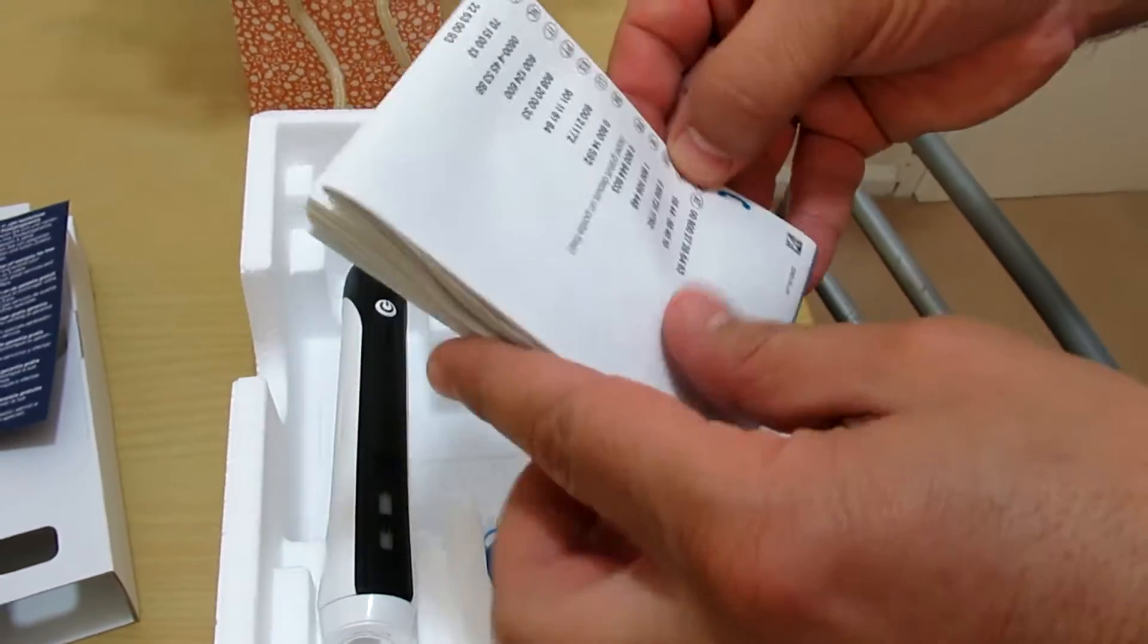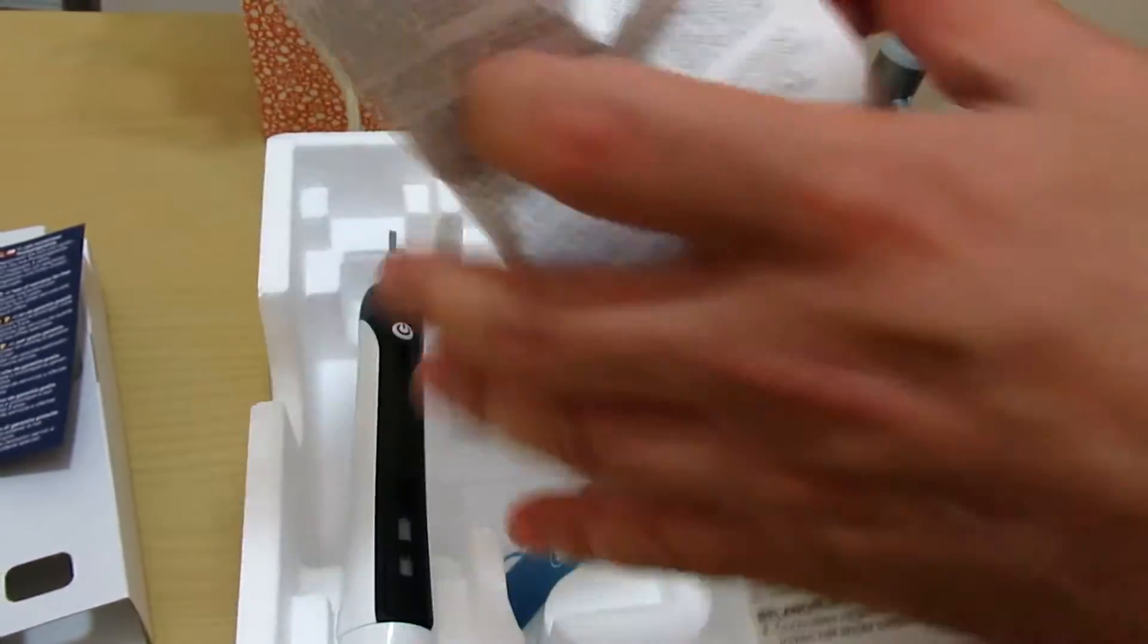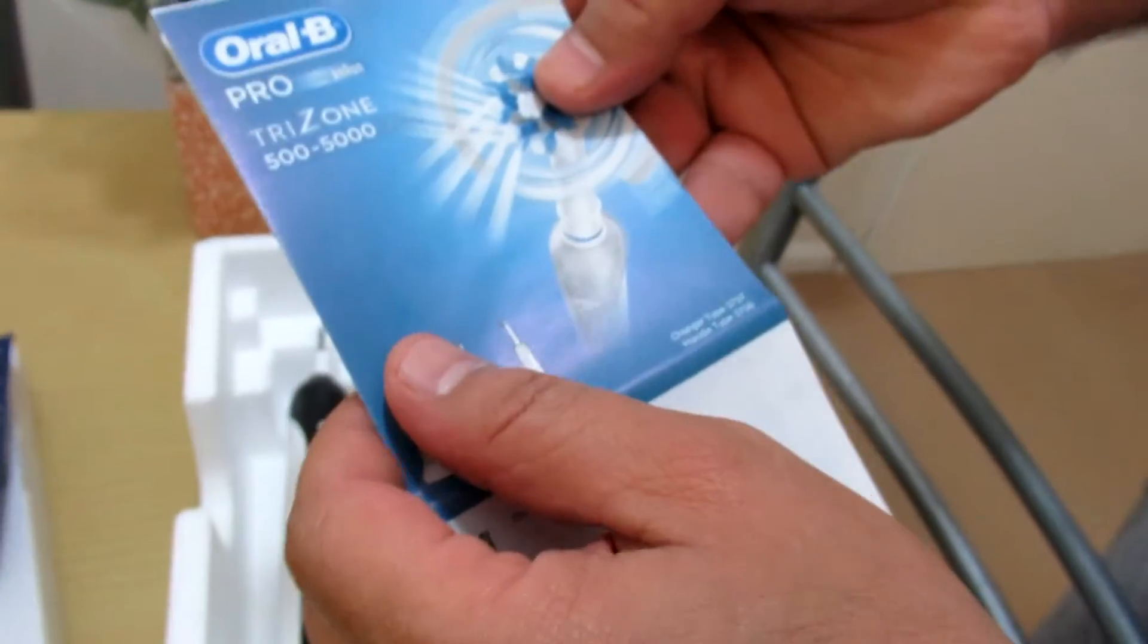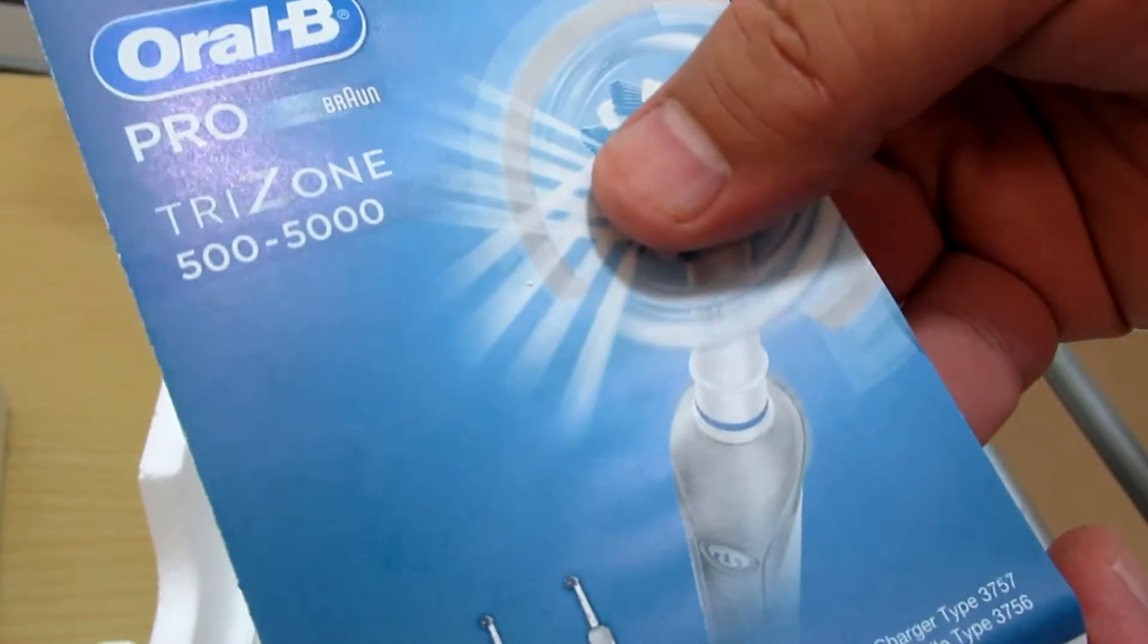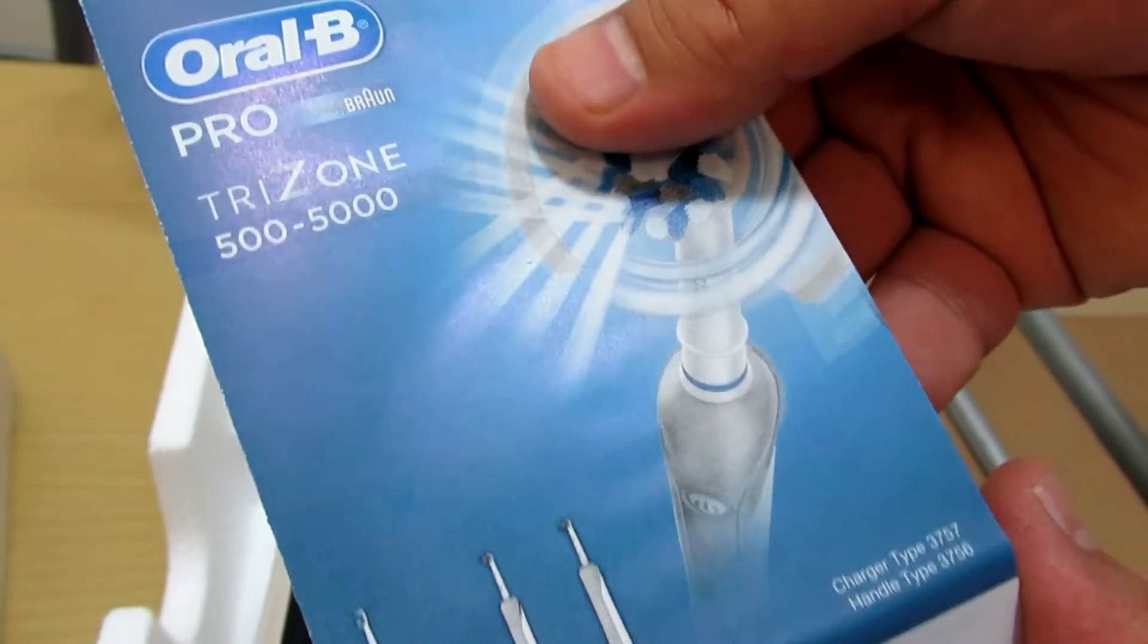This is the information booklet, information guidance on how to use the model Trizone 500, 5000, or Oral B.